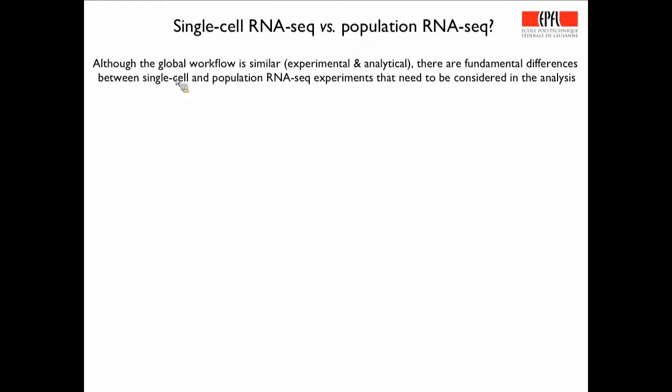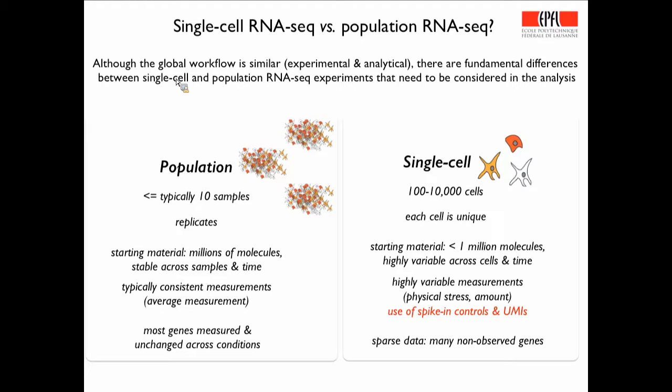Single-cell RNA-seq versus population RNA-seq: the global workflow is similar both experimentally and analytically, but there are fundamental differences. For population RNA-seq, you typically deal with fewer than 10 samples with replicates, starting material of millions of molecules which are stable across samples, average measurements, and an assumption that most gene expression is unchanged across conditions. These assumptions go into most analytical tools used for population RNA-seq.